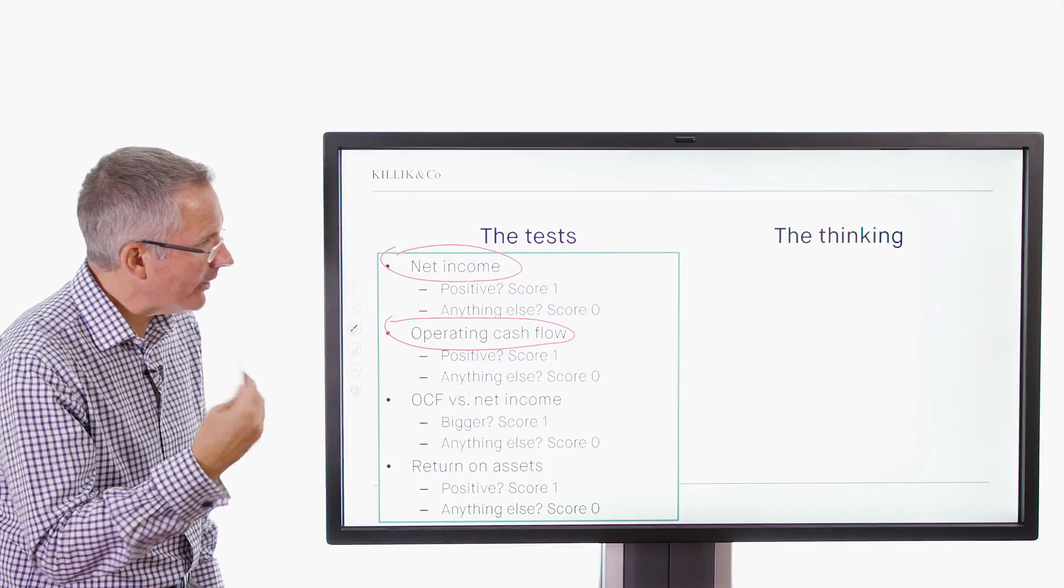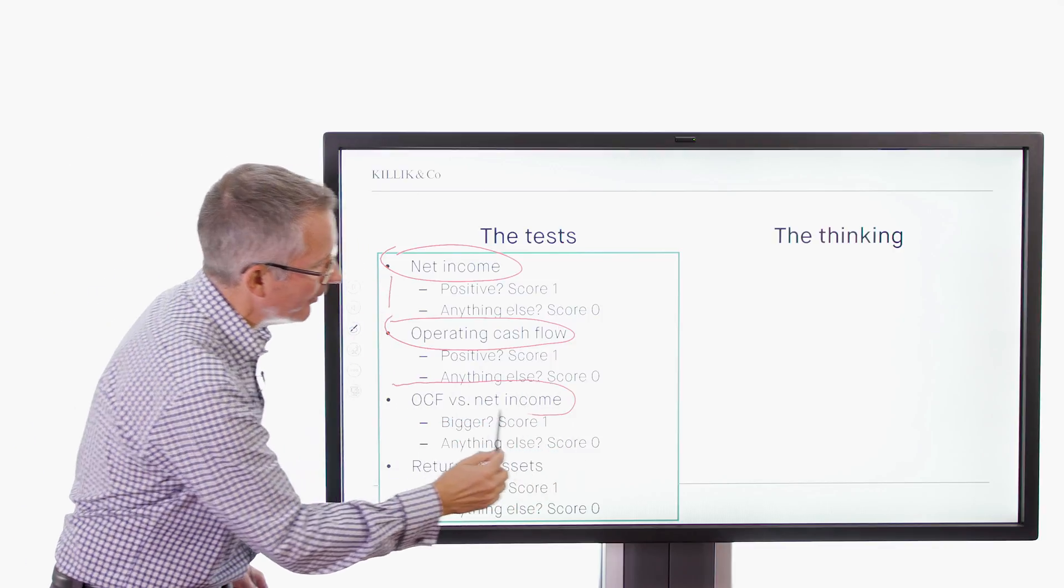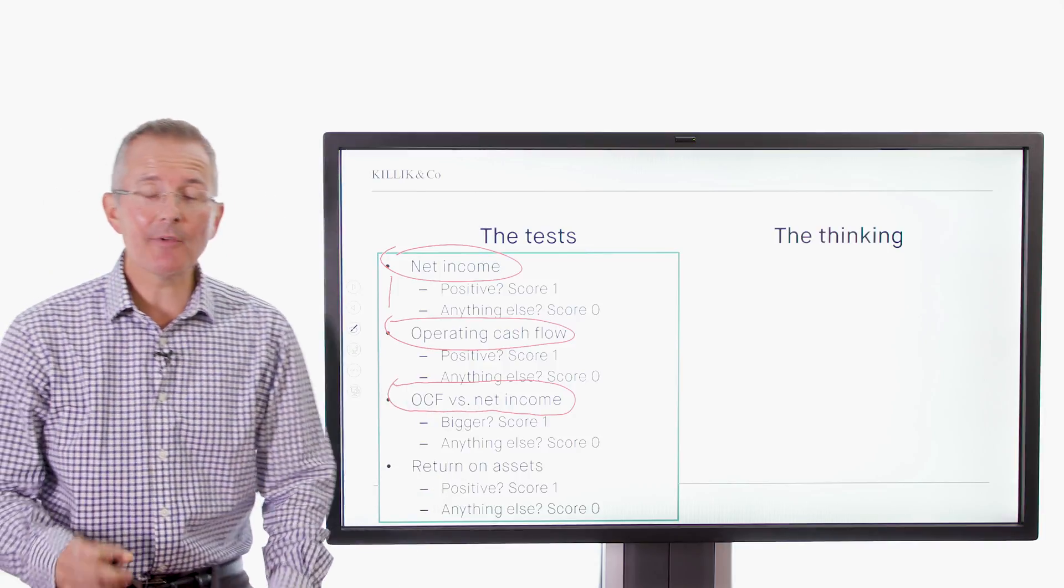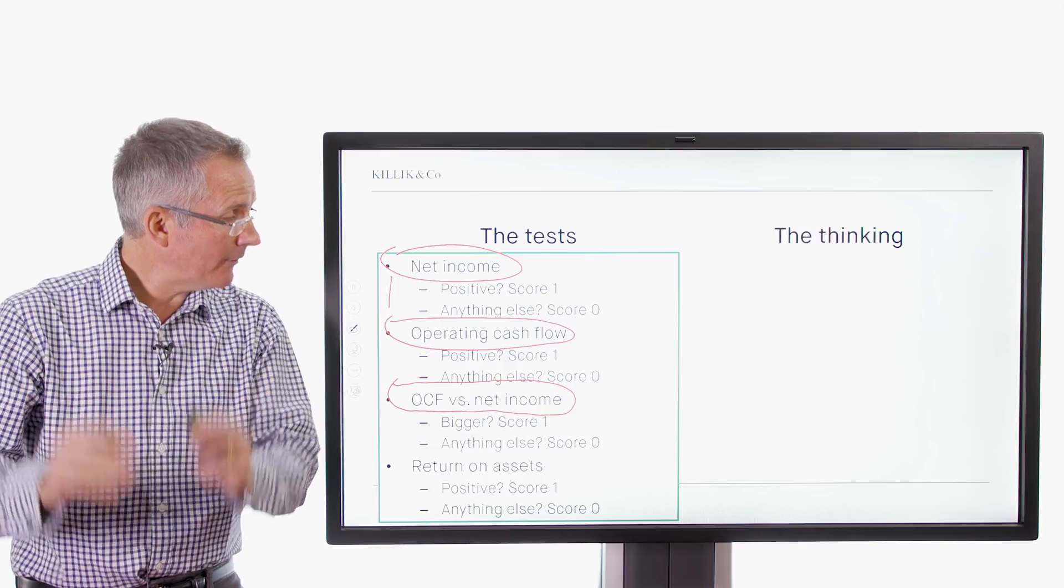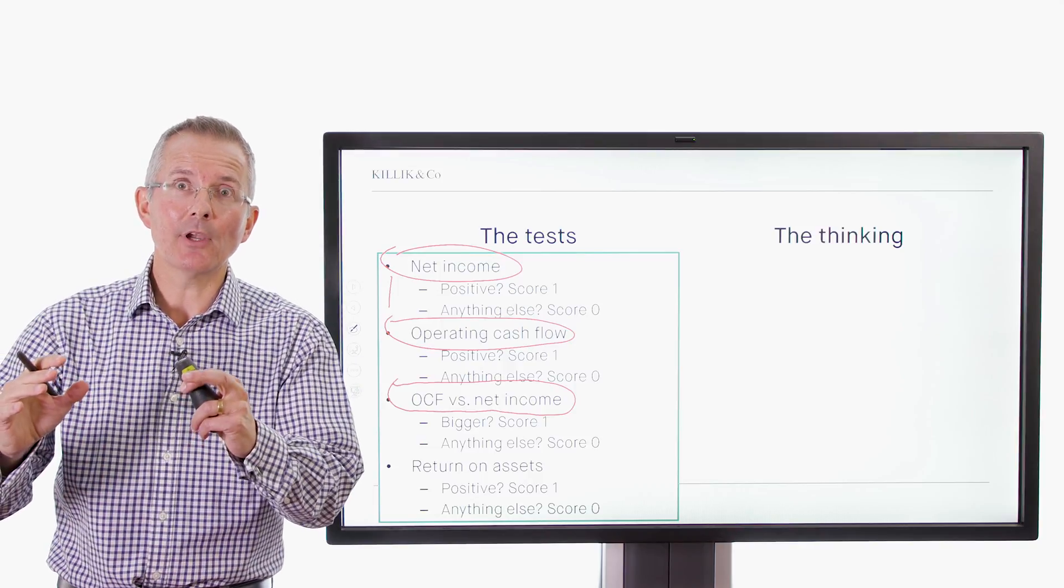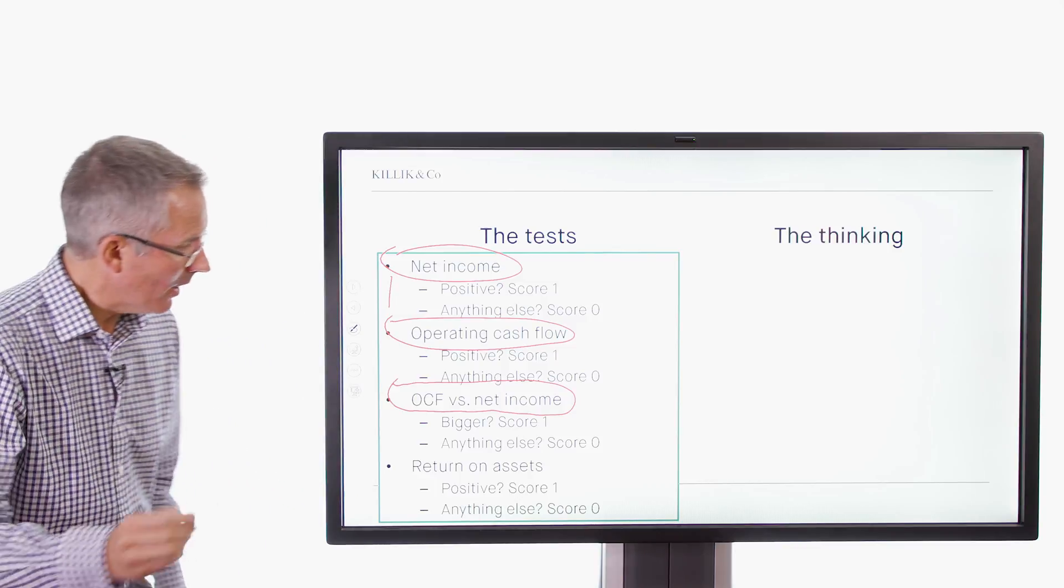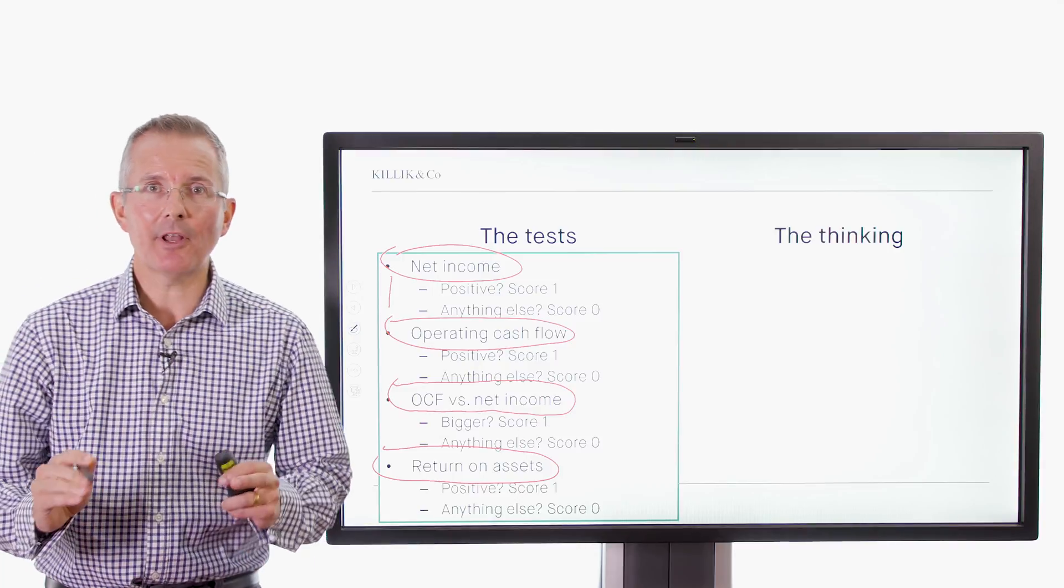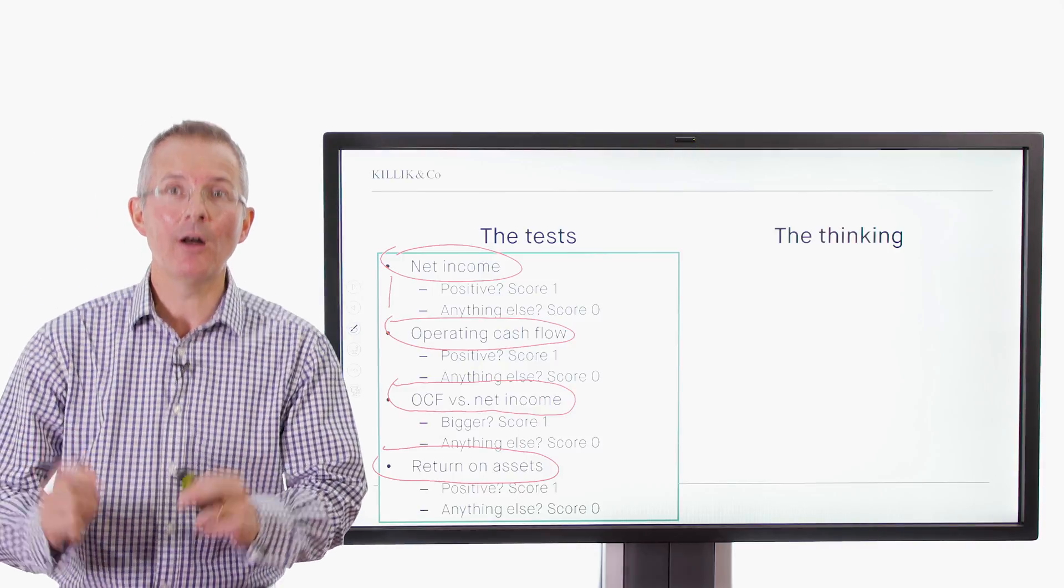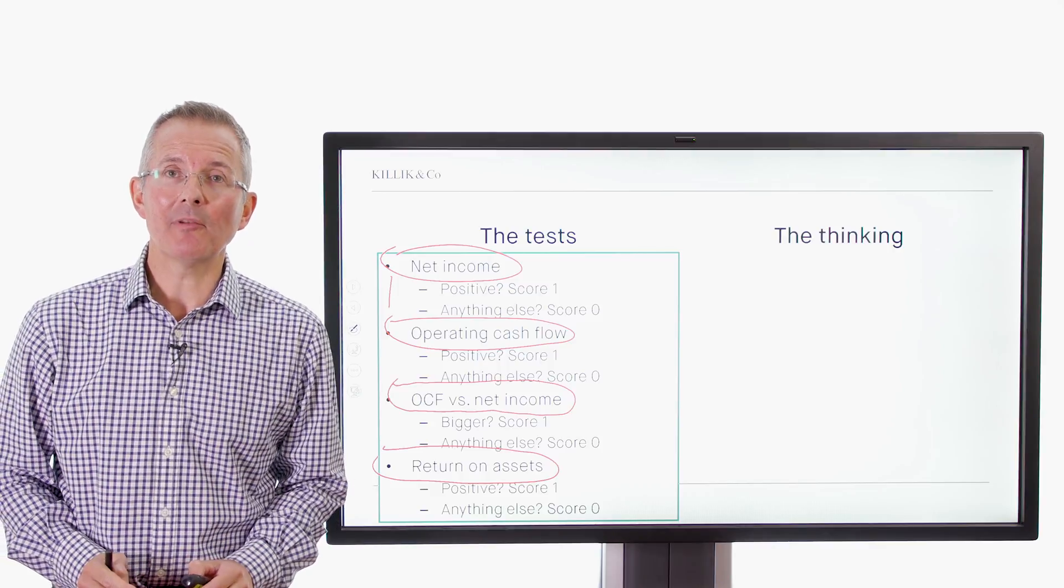Now, the quality of income, so comparing these two, looking at operating cash flow versus net income. And I cover these in more detail in other videos. I'm flying through it here a little bit. One point if you've got operating cash flow that does cover at least net income. No points if you haven't. And finally, return on assets. Is it positive? Have another point. That could be four out of four so far. If not, score zero.